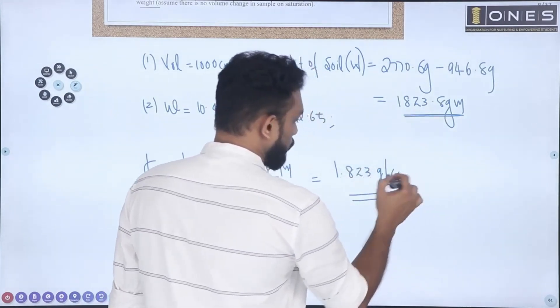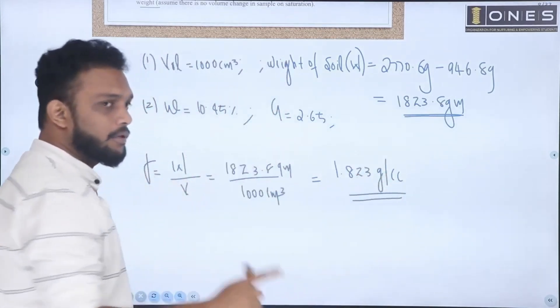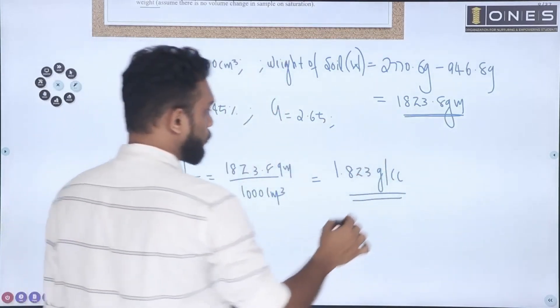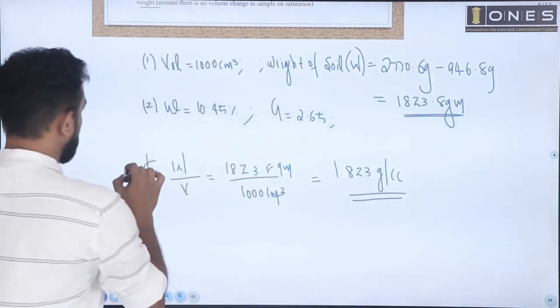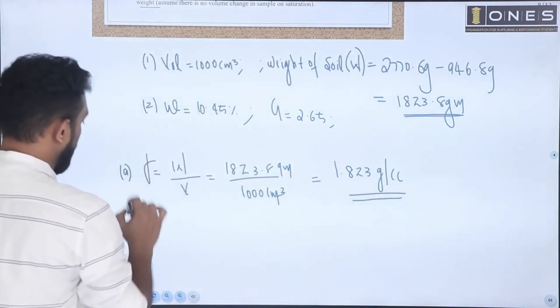The bulk unit weight is 1.823 grams per cc. The unit is very important from the university exam point of view — always write the unit.